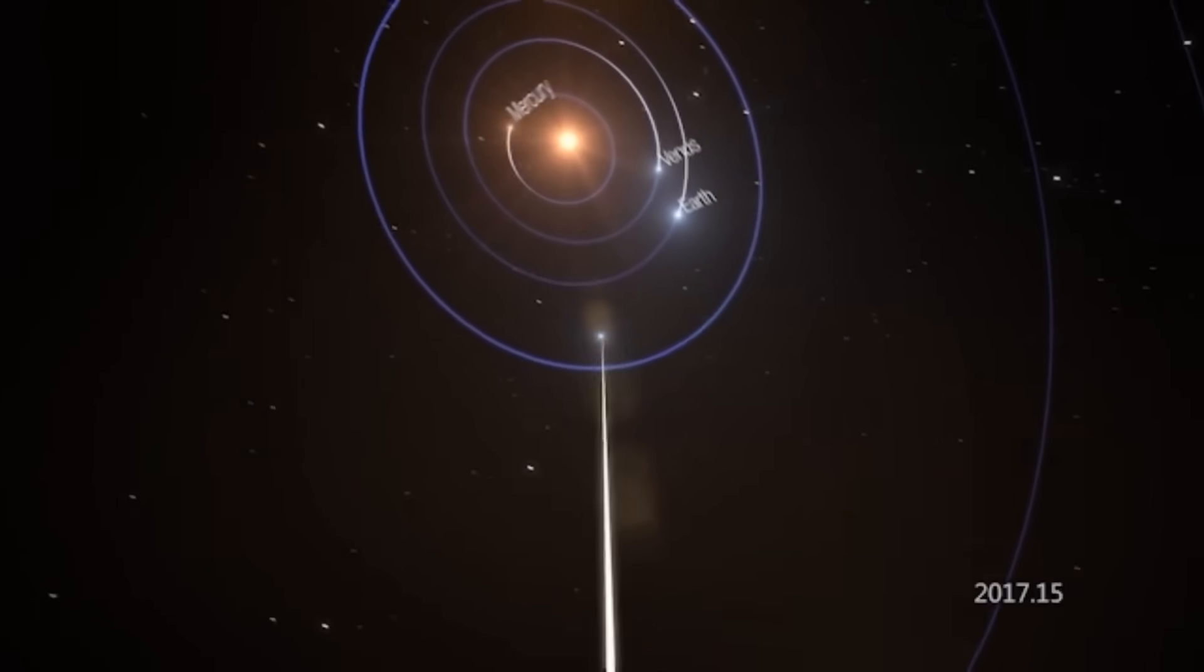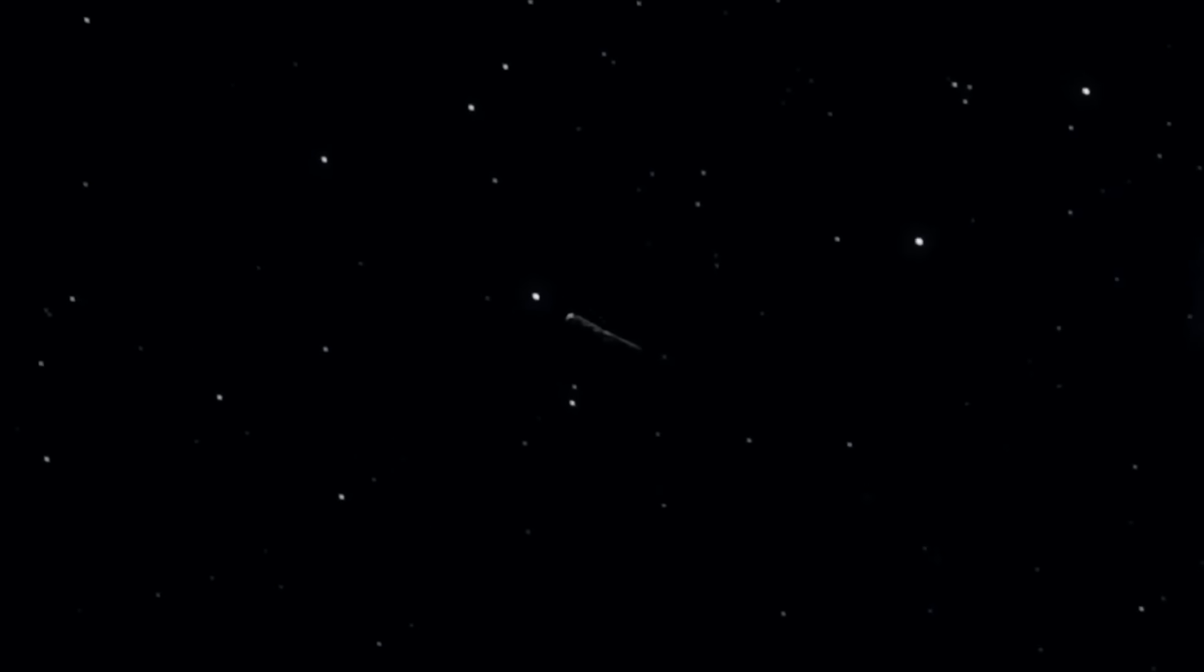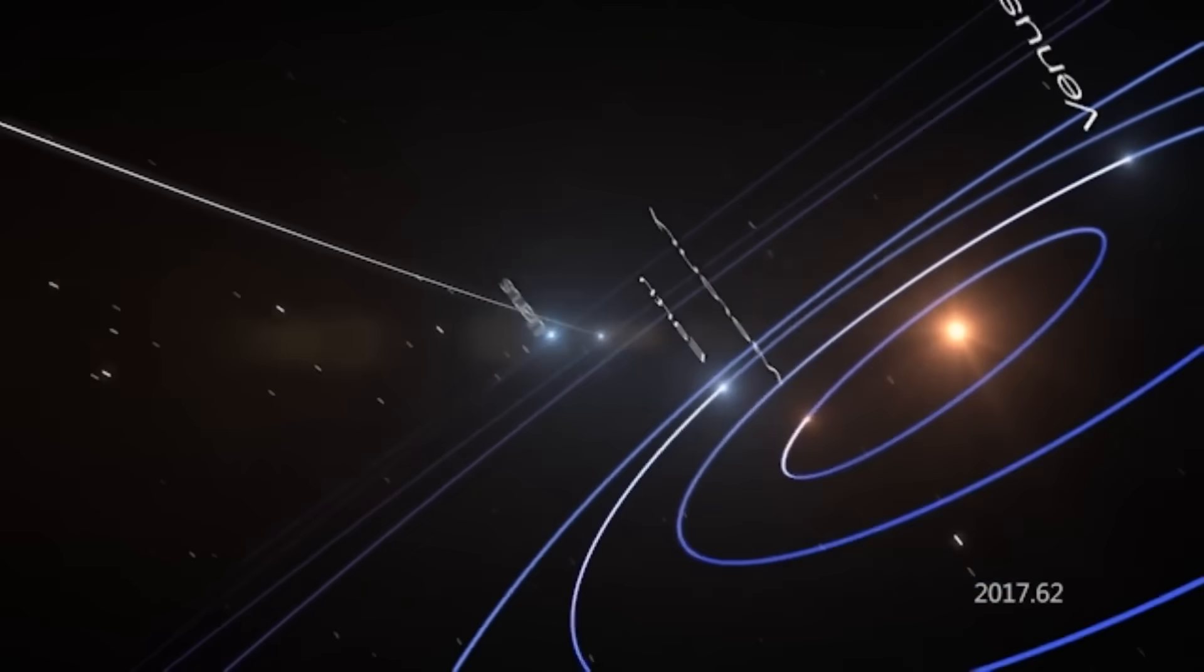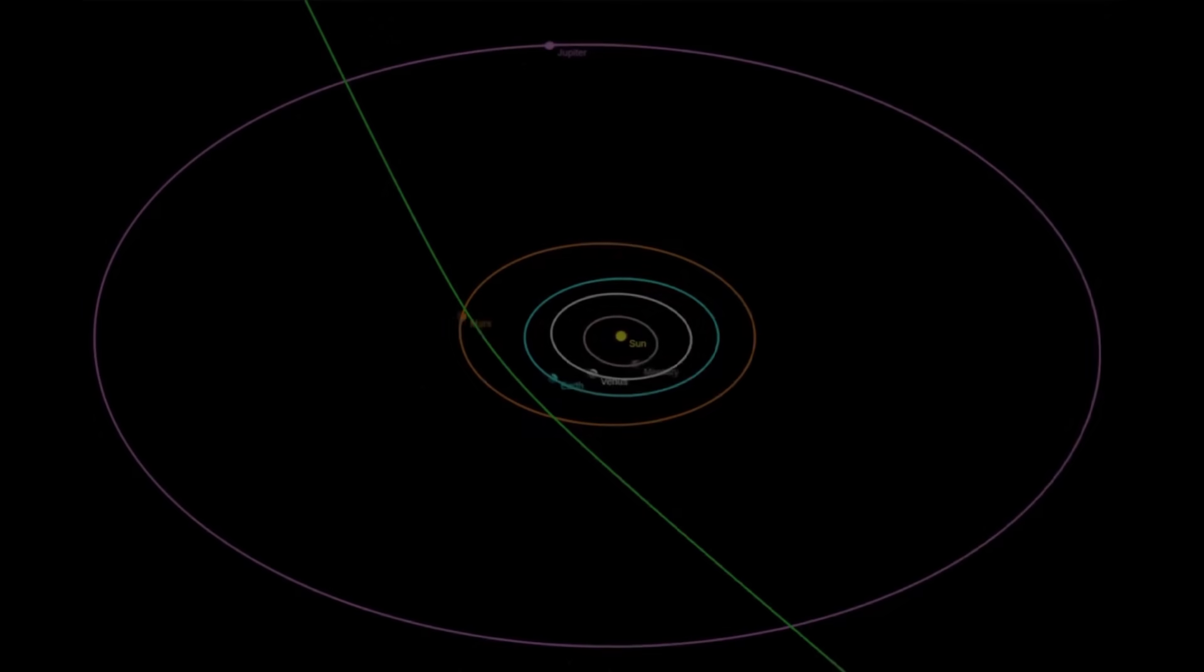Three days ago, Atlas altered its trajectory. Again. But this time, it wasn't a slight adjustment. It was a calculated maneuver, an angular velocity shift that placed it on a new intercept course with a zone previously considered irrelevant, the orbital region behind Neptune.